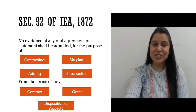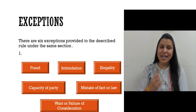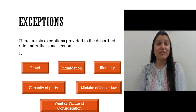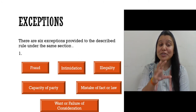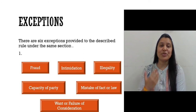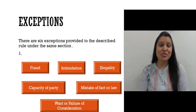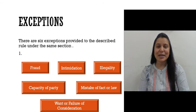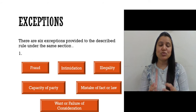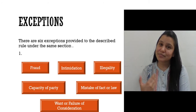But again, this section also has exceptions. The first exception is: if anything can invalidate the document — if anything can make that document invalid — then that oral evidence would be admissible. That oral evidence should relate to fraud. If by oral evidence it is proved that the contract was entered through fraud, then that oral evidence would be admissible, because that will make the contract invalid.